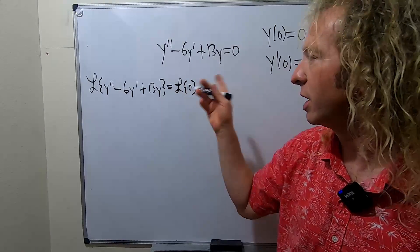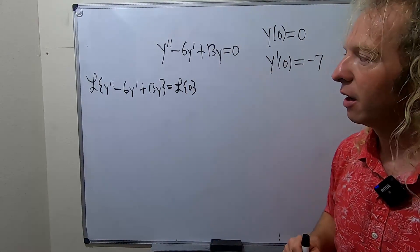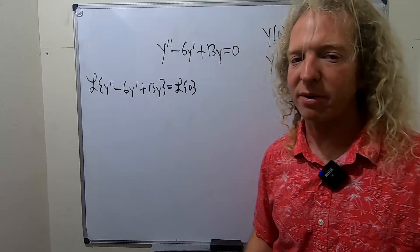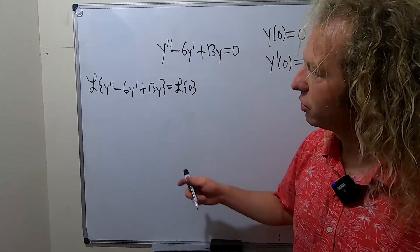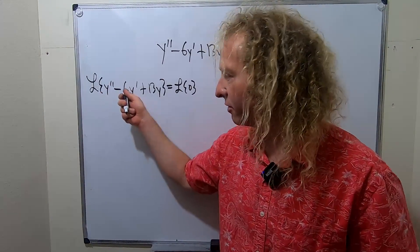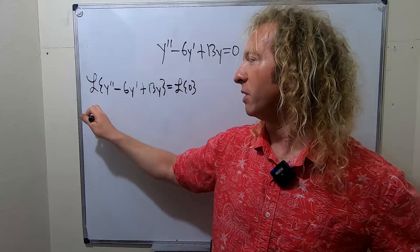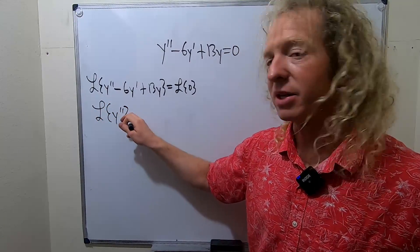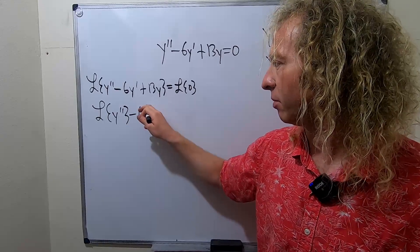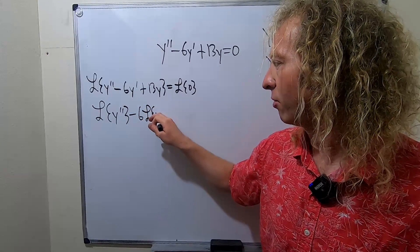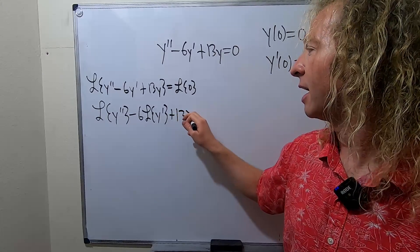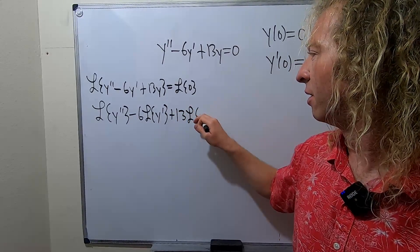So step 1 is you take the Laplace of both sides of the DE. The next step is to use the linearity properties of the Laplace transform. So you take the Laplace of each individual piece. This will be the Laplace of y double prime minus 6 times the Laplace of y prime plus 13 times the Laplace of y.